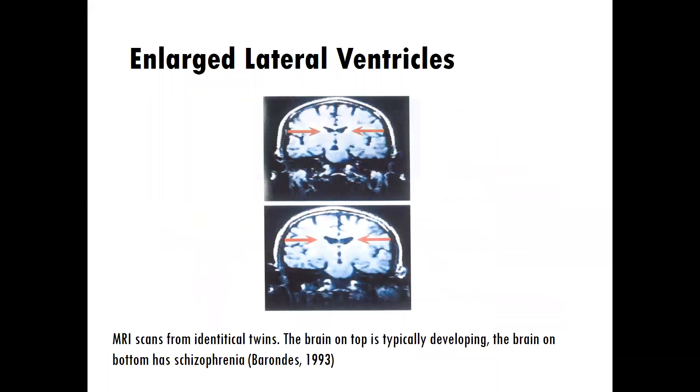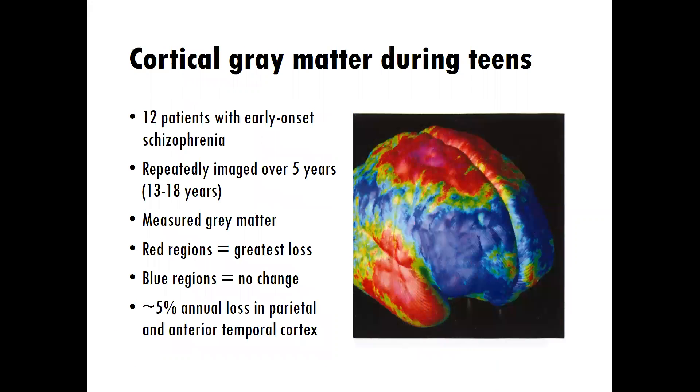Then we'll learn about schizophrenia, the enlargement of lateral ventricles, gray matter during the teenage years, and what happens over time with schizophrenia. And we'll learn about how, unfortunately, schizophrenia can really be classified as a brain disease in many ways.